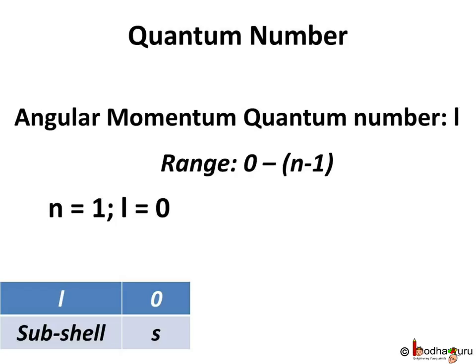This means for n equal to 1, L is only 0, which means there is only one sub-shell: the sub-shell s.